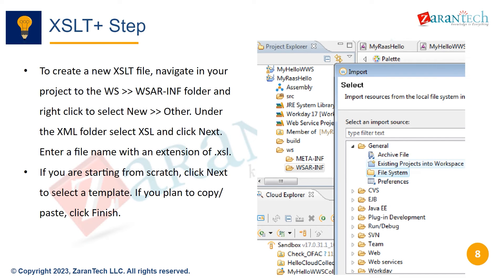To create a new XSLT file, navigate to the WSWizor-INF folder and right-click to select New Other. Under the XML folder, select XSL and click Next. Enter a file name with an extension of .XSL. If you are starting from scratch, click Next to select a template. If you plan to copy and paste, click Finish.